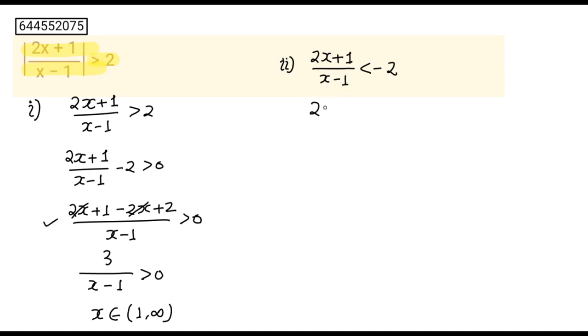I am going to write this step directly. After calculation, this will become (2x + 1 + 2x - 2)/(x - 1) and this will become (4x - 1)/(x - 1) less than 0.